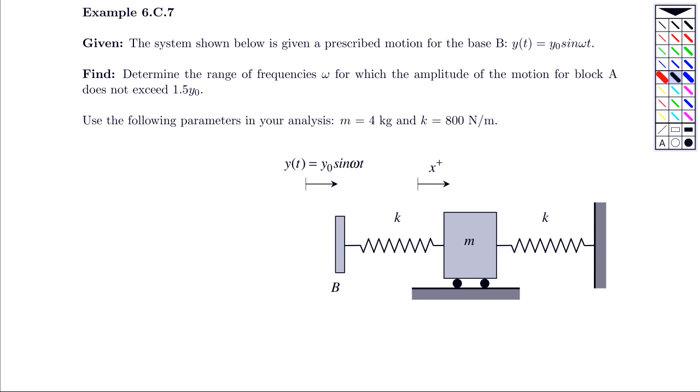We're interested in the steady state response of the block, and what we want to do is find a range of frequencies omega for which the amplitude of the motion of block A does not exceed 1.5 times the amplitude of b. So we're going to allow the motion of A to exceed that of b by 50%. Over what range of frequency is that possible?